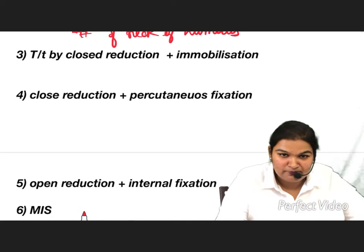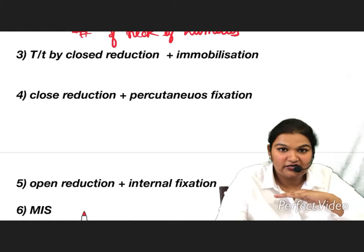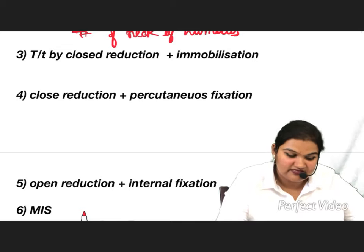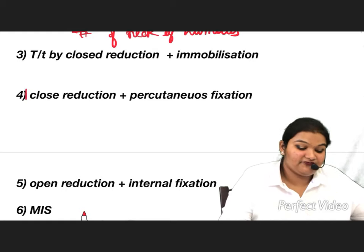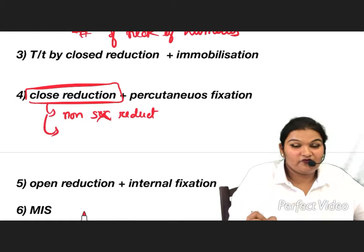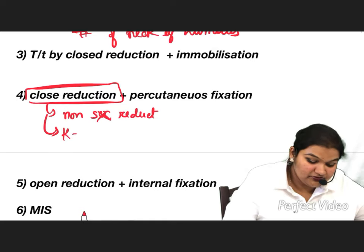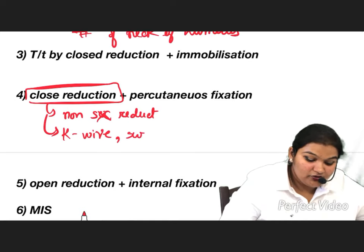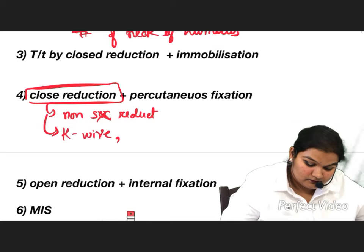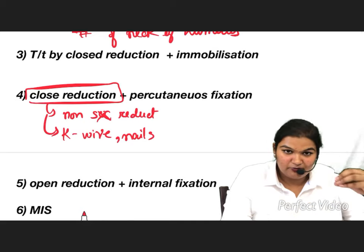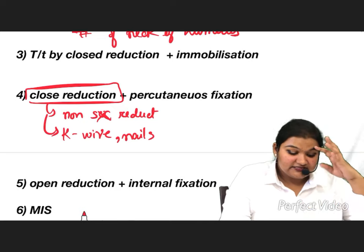In closed reduction and subcutaneous fixation, you reduce the fracture non-surgically and then fix it percutaneously using K-wires, screws, nails, or plates — whichever is necessary — without opening the fracture site.